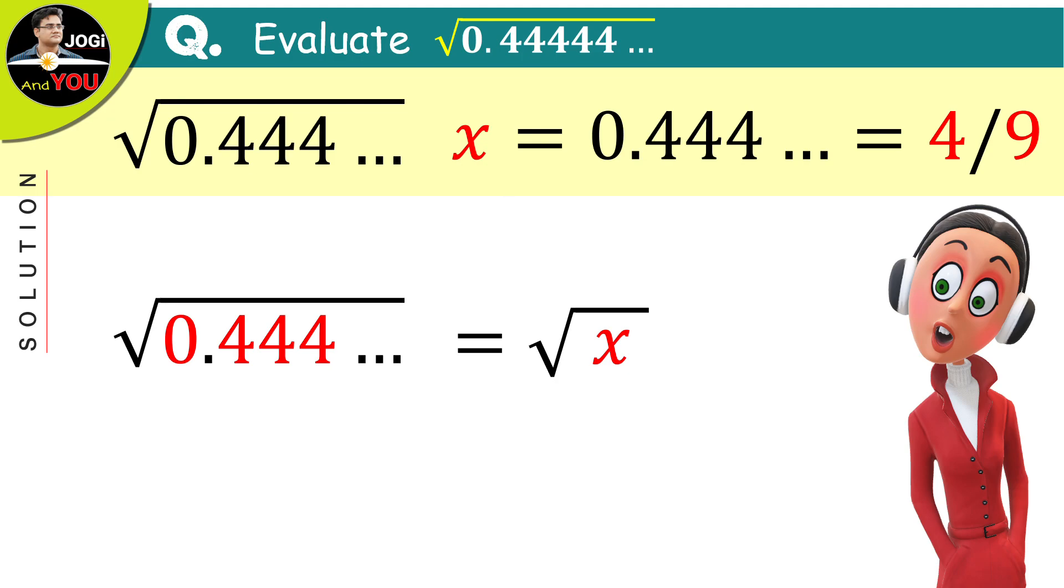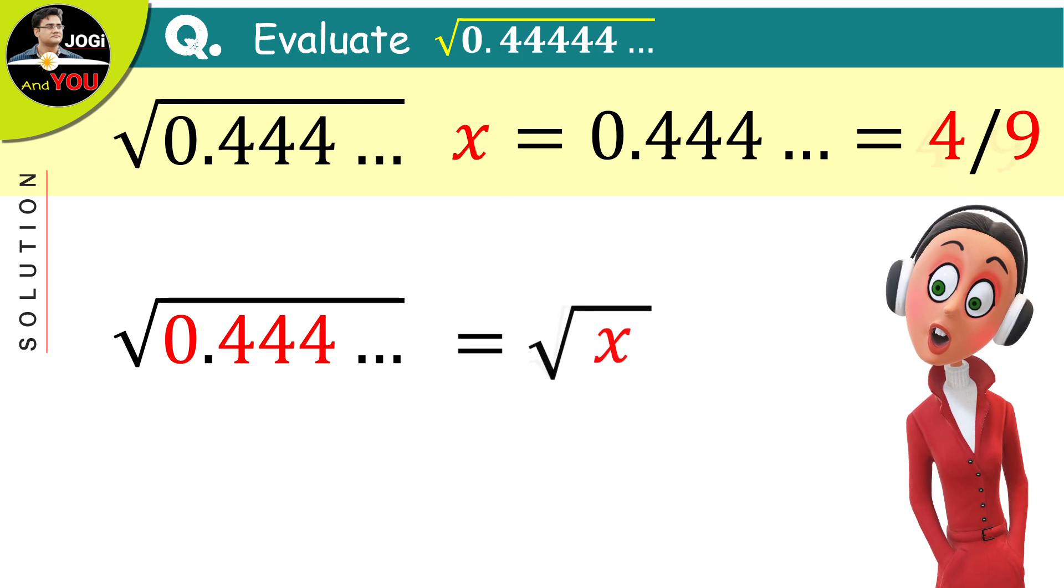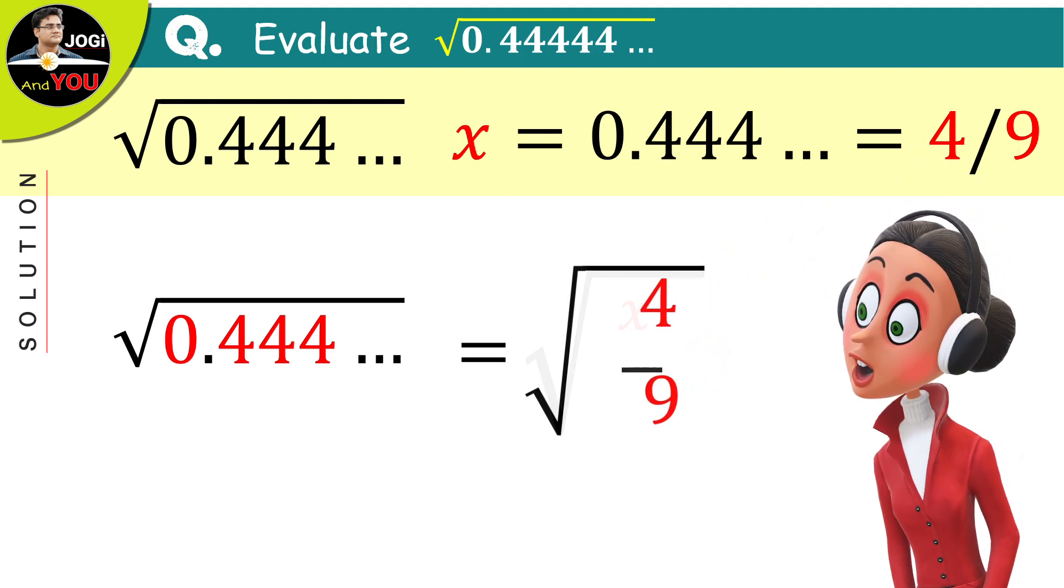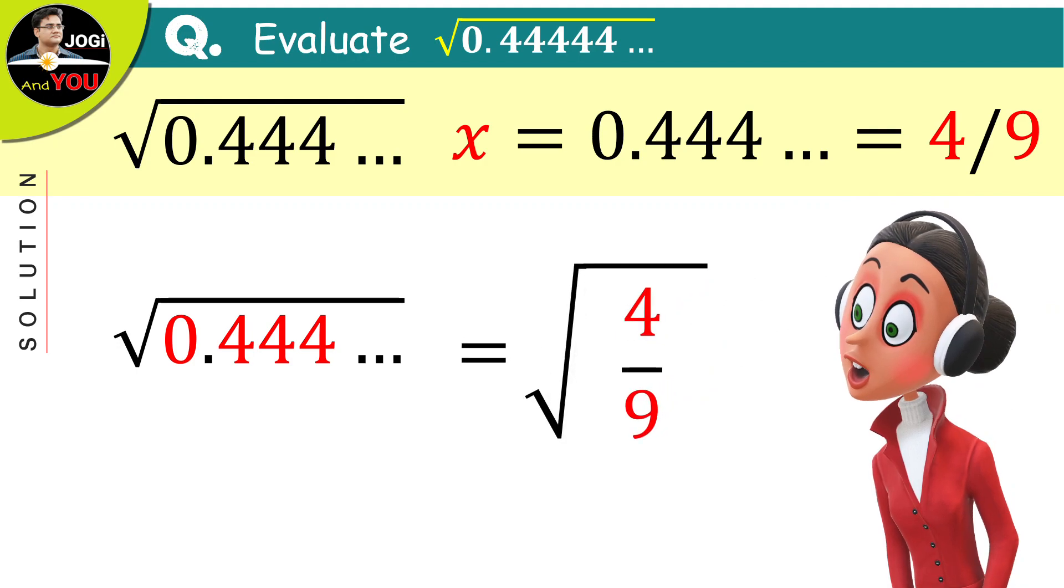And also, we calculated earlier and got the value of x which is 4 over 9. So, just replace it in the place of x just like this. Now, let's split this radical symbol into both numerator and denominator and this is also a rule that we used here.